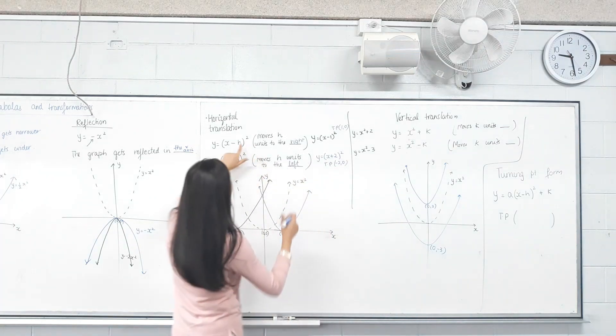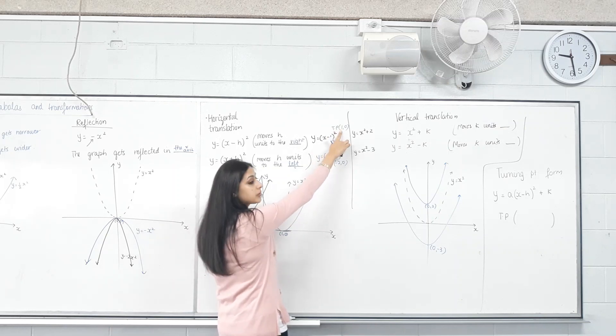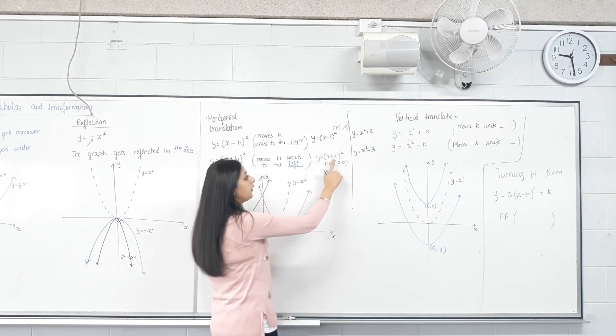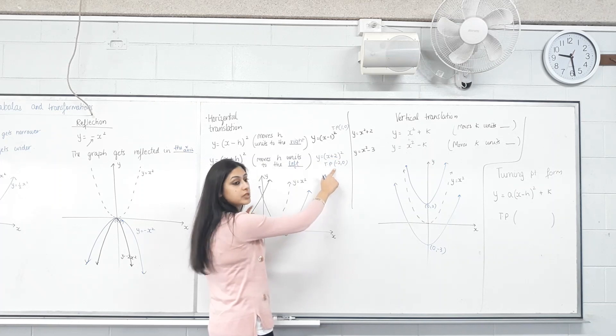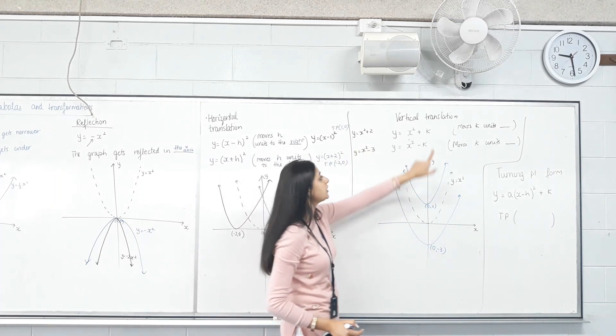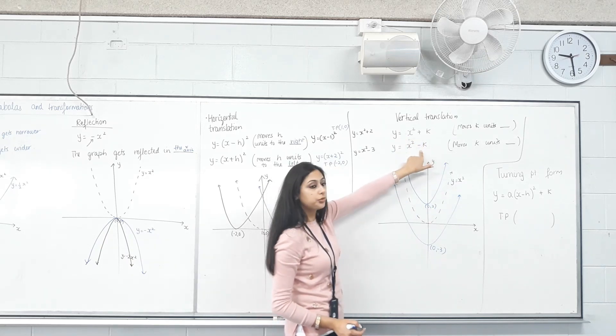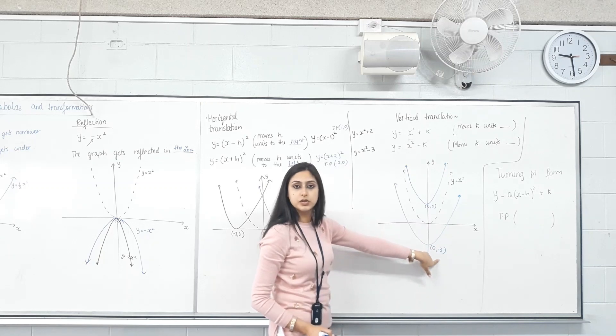In this case, the turning point became opposite. If you subtracted from x, minus 1, the turning point was (1, 0). If you added 2, the turning point was (-2, 0). However, with vertical translations, if you add, the turning point is also positive: (0, 2). If you subtract, the y-coordinate of the turning point is also negative.